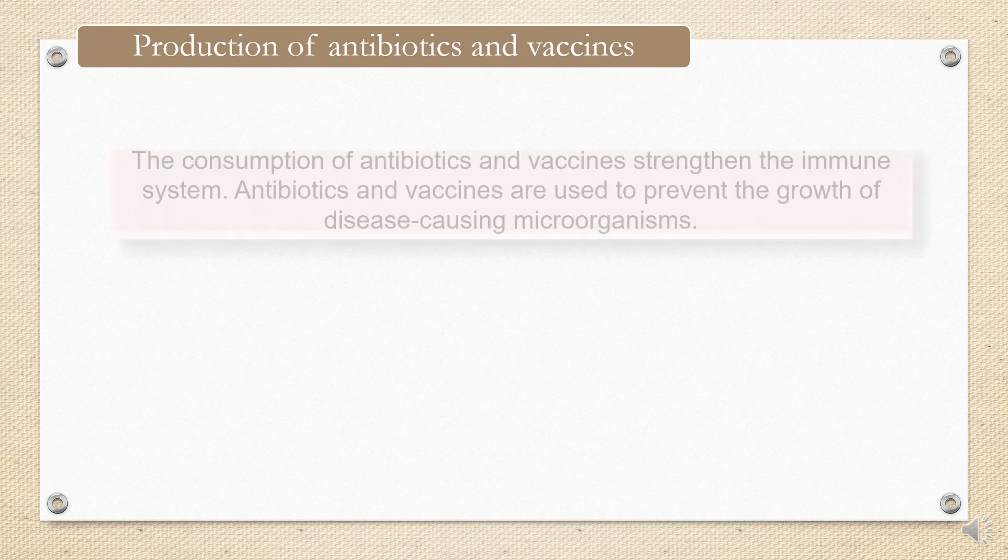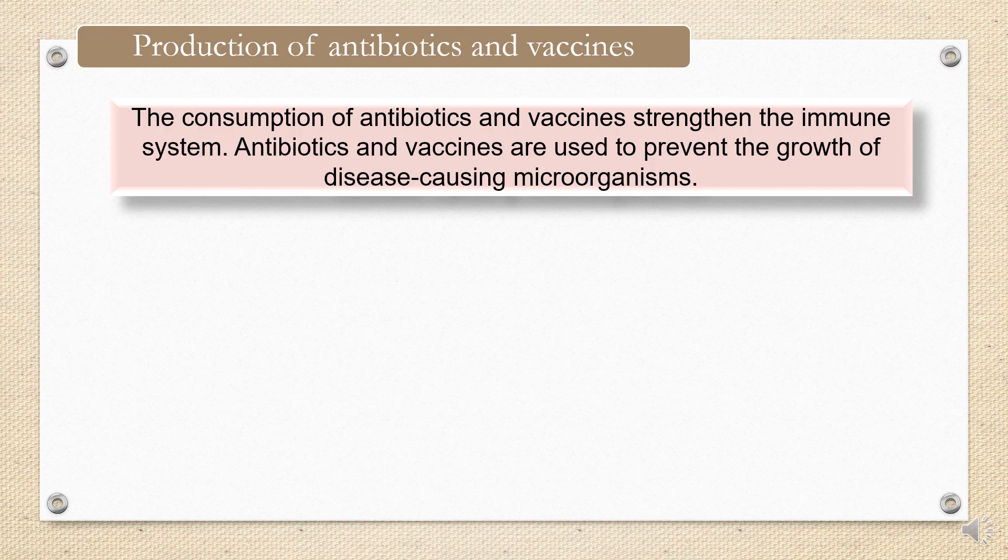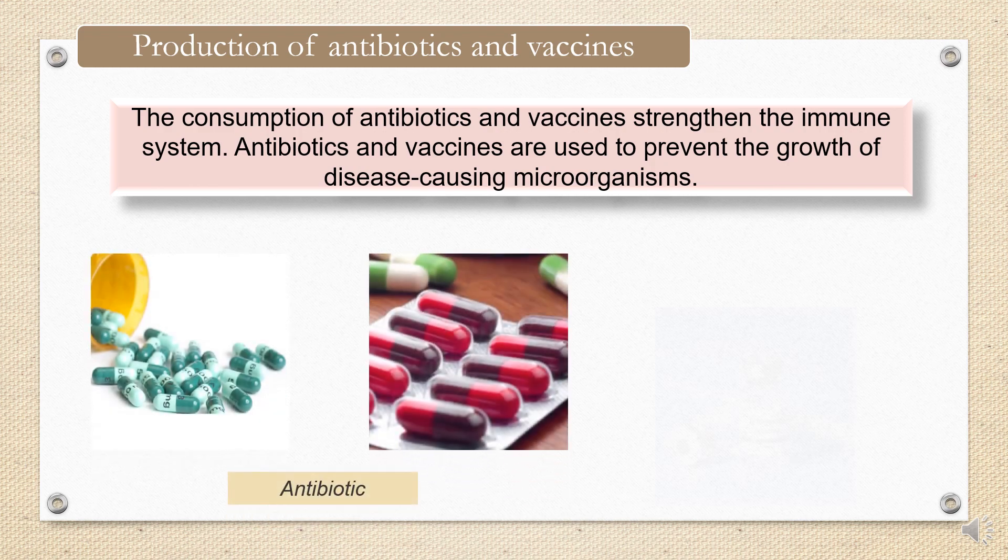Next, production of antibiotics and vaccines. The consumption of antibiotics and vaccines strengthen the immune system. Antibiotics and vaccines are used to prevent the growth of disease-causing microorganisms. That is why it is important for us to take vaccines. If we take vaccines, that means our body already has the immune system to fight that bad bacteria or bad virus. That is the important thing for us to have vaccines. And one important thing is when the doctors give you antibiotics, make sure you need to complete the antibiotics even though you already feel healthy. You need to complete the antibiotics. So next time when the same disease comes back, you already have the immune system, the immunity.